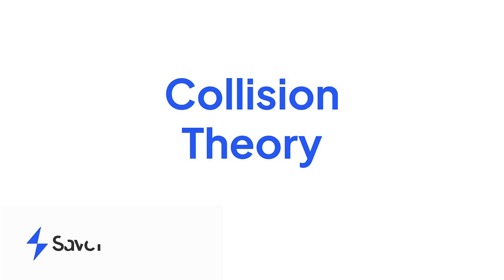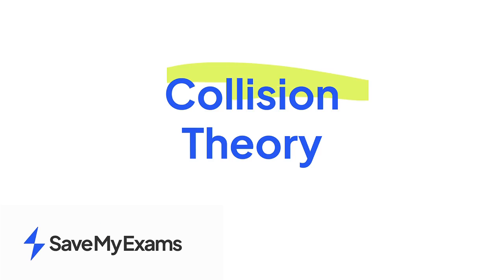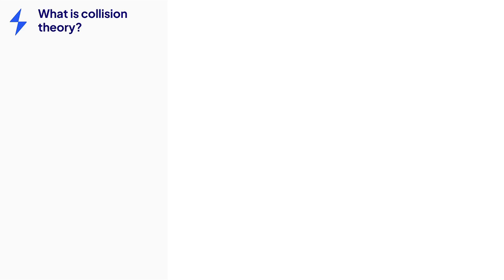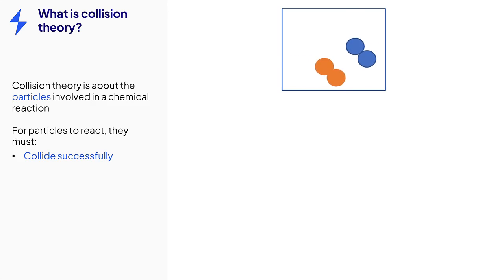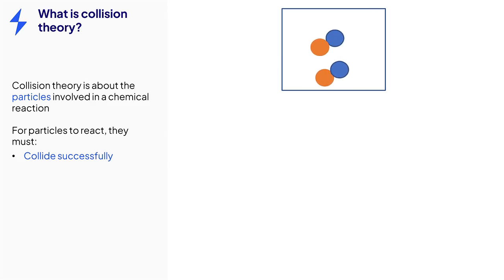This video looks into collision theory and how it affects chemical reactions. Collision theory is about the particles involved in a chemical reaction. For a reaction to happen, the reacting particles must collide successfully.